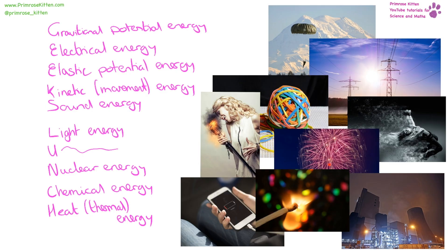With the fireworks, it was stored as chemical energy and then transferred into kinetic energy as it moves up. As it explodes we are going to have light, heat and sound energy coming out, and then gravitational potential energy as it starts to fall, and kinetic energy as it falls back down.